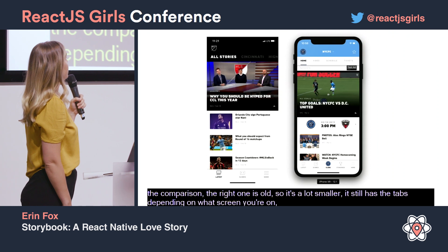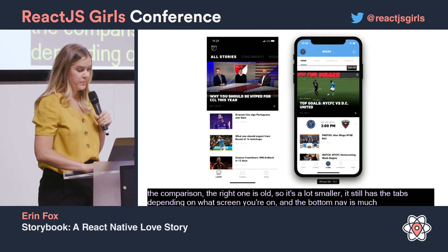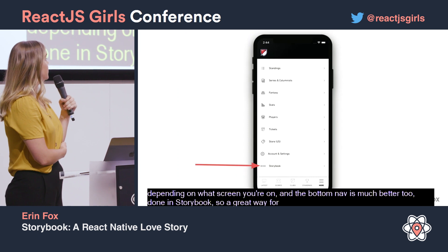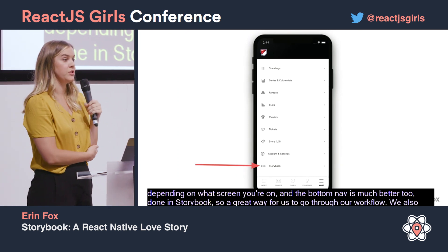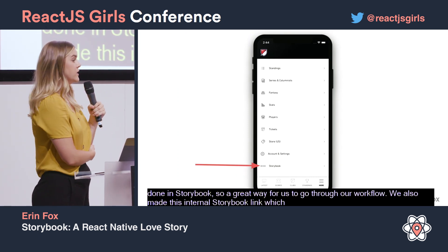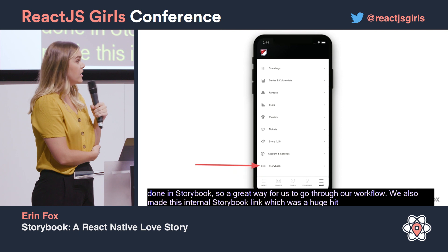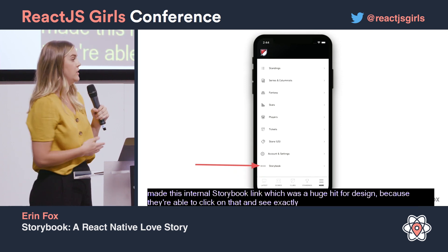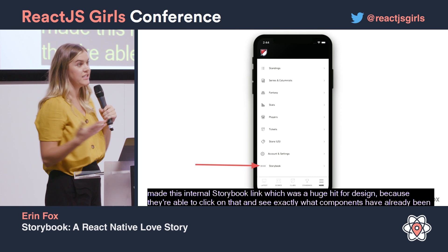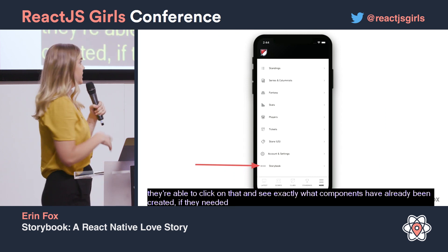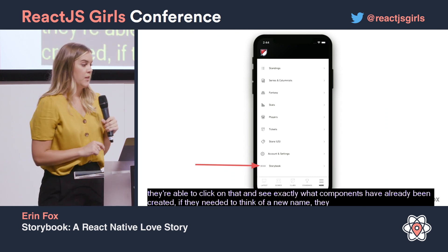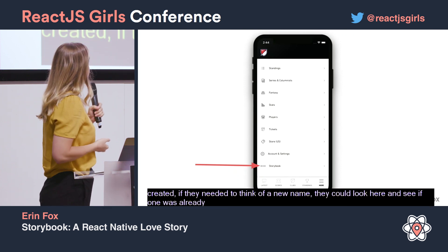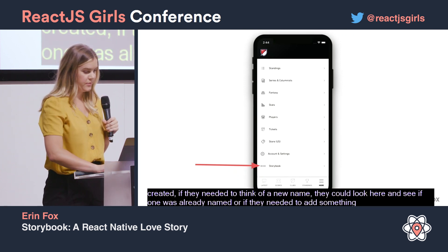It was a great way for us to go through our workflow. We also made an internal Storybook link, which was a huge hit for design — they could click on it and see exactly which components had already been created. If they needed to think of a new name, they could check if one was already used, or see if they just needed to add something to a certain prop. That was a big hit.